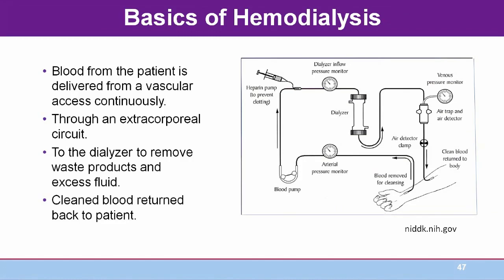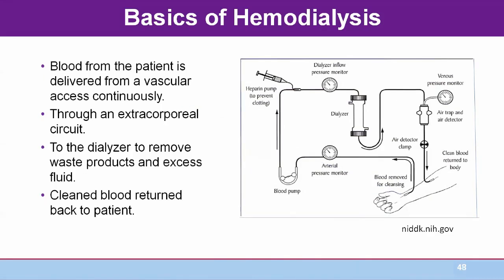Whether done at home or in-center, the hemodialysis process differs from assisted dialysis only in terms of who is the caregiver. Blood from the patient is delivered continuously from the vascular access through an extracorporeal circuit to the dialyzer, where waste products such as uremic toxins and excess fluid are removed, and the cleared blood is returned to the patient. The vascular access needs to be a sufficiently high-flowing vessel to deliver approximately 400 to 500 mls per minute in order to adequately dialyze the patient.